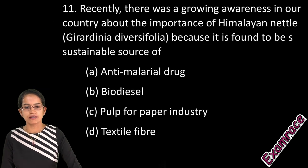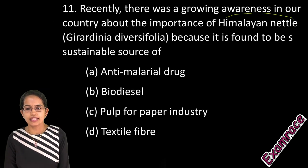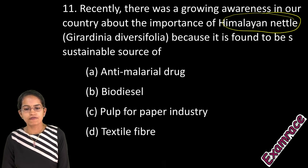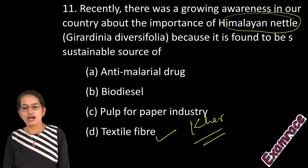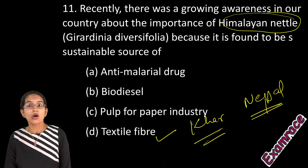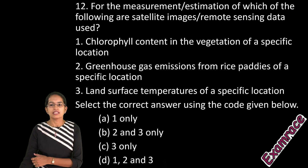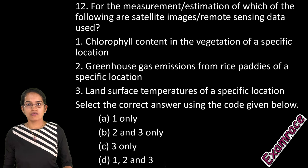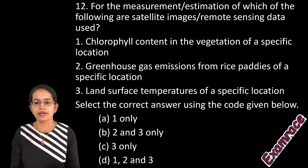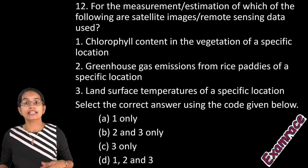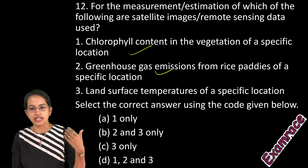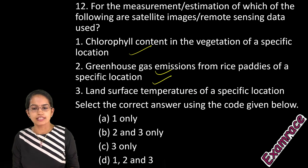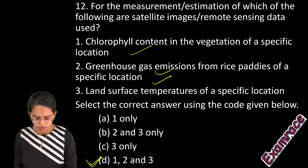Himalayan nettle is a kind of textile fiber used by the Khar community, mainly in the far-east areas of Nepal — a special case study from Down to Earth. The next is a very important question from GIS: satellite images and remote sensing data can measure and estimate chlorophyll content of vegetation, greenhouse emissions from rice paddies, and land surface temperature. All three are correct options.